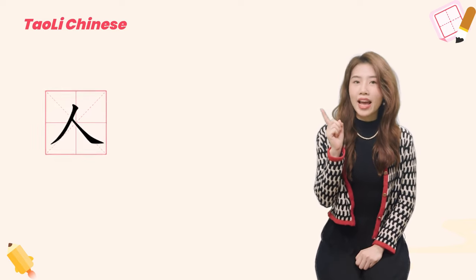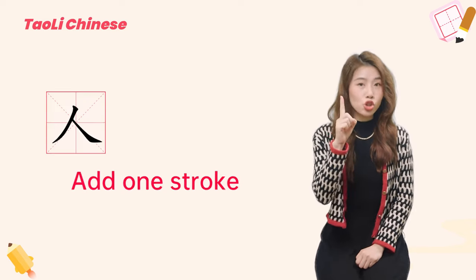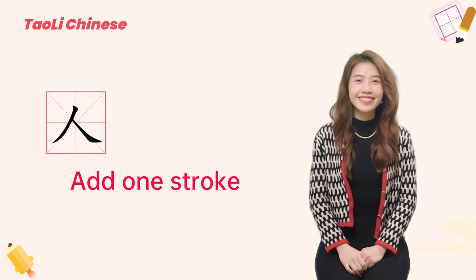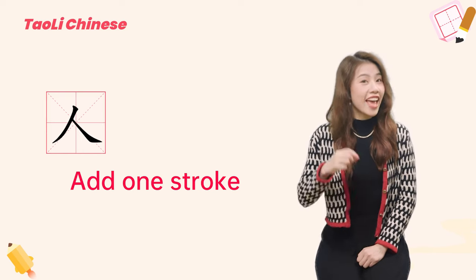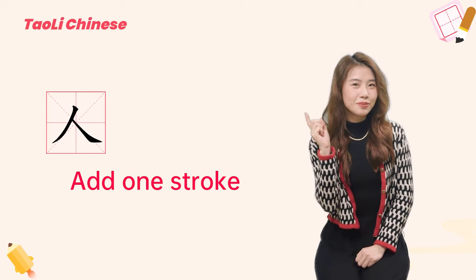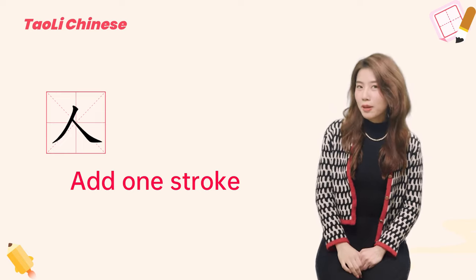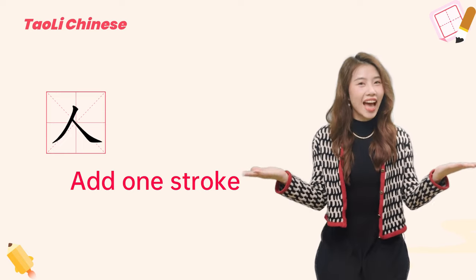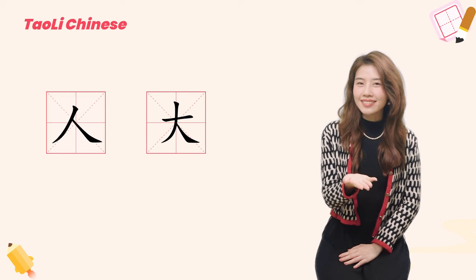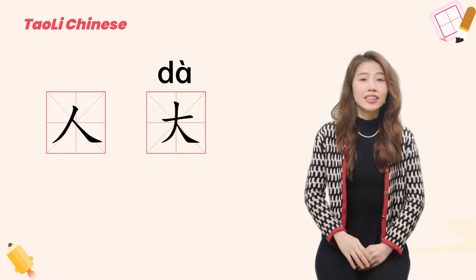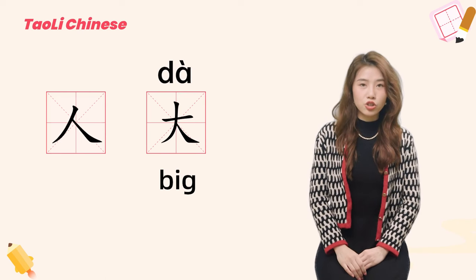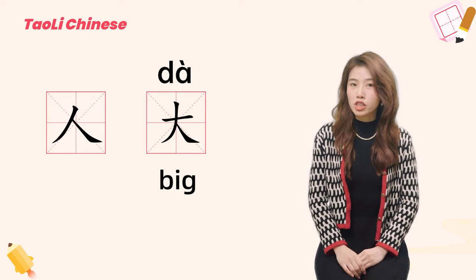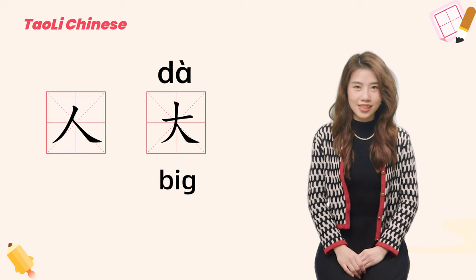My question is: what character can be made by adding one stroke to 人? Any ideas? What would it be? The answer would be 大. 大 means big. It is an adjective used to describe the size of an object.